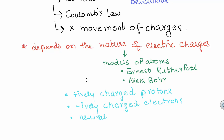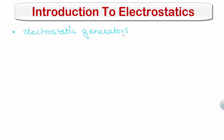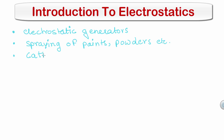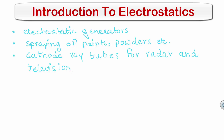What we study under electrostatics is static electricity. Electrostatics also has some industrial applications. Some of them are in designing electrostatic generators like the Van de Graaff generator. Electrostatics also finds its uses in the spraying of paints, powder, etc. It finds use in the design of cathode ray tubes for radars and television. Another application of electrostatics is in inkjet printing. Apart from these, there are many other applications of electrostatics that can be found in industries.